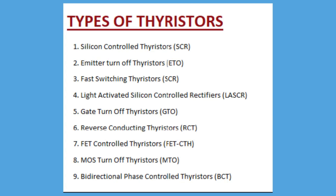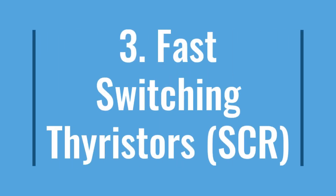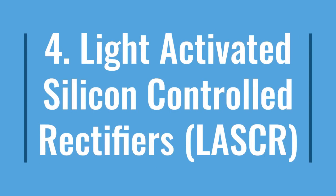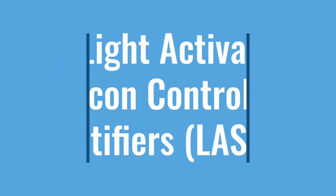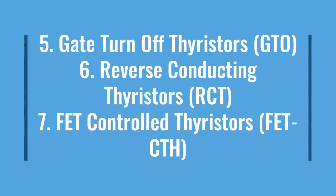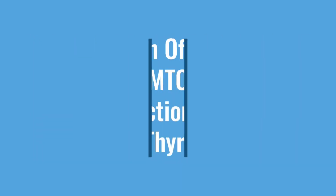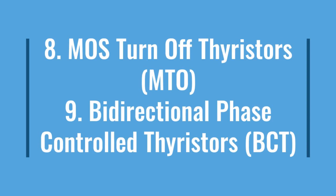Types of thyristors include: (1) Silicon Controlled Rectifiers (SCR), (2) Emitter Turn-Off thyristors (ETO), (3) Fast Switching Thyristors (SCR), (4) Light Activated Silicon Controlled Rectifiers (LASCR), (5) Gate Turn-Off thyristors (GTO), (6) Reverse Conducting Thyristors (RCT), (7) FET Controlled Thyristors (FET-CTH), (8) MOS Turn-Off thyristors (MTO), and (9) Bi-directional Phase Controlled Thyristors (BCT).